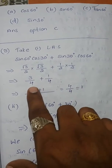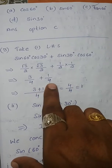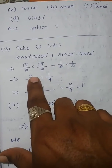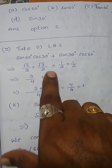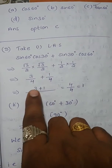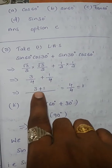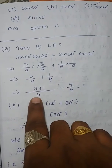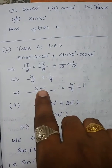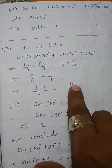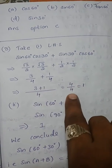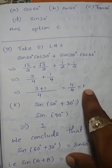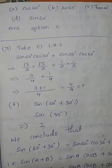Both fractions have the same denominator, so we can directly add the numerators: 3 plus 1 by 4. That gives 4/4, which is equal to 1.